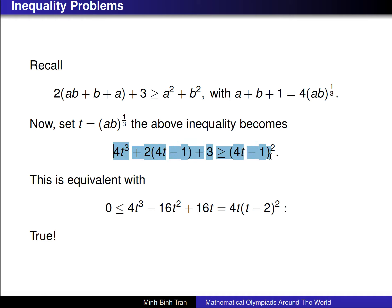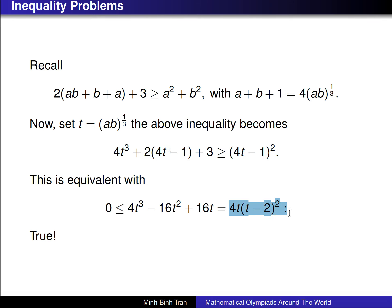Basically, we need to show that 4T³ + 2(4T − 1) + 3 ≥ (4T − 1)² − 2T³. When you expand and simplify, this is equivalent to showing 0 ≤ 4T³ − 16T² + 16T, which can be written as 4T(T − 2)². This quantity is non-negative, so the inequality is proved.